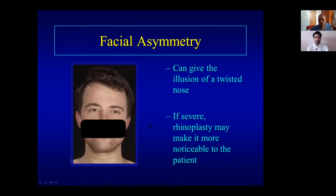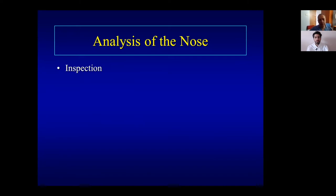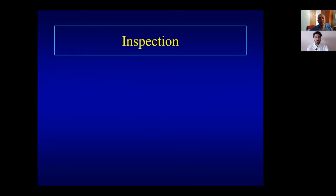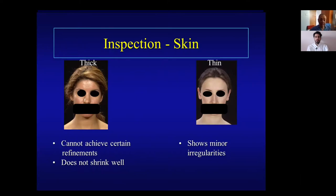Now we get to the nose. In inspection I look at seven areas: skin, deviation of the nose, length, projection of the tip, dorsum, the tip itself, and the alar base. You can do this in two minutes in the clinic — tick, tick, tick through each one.